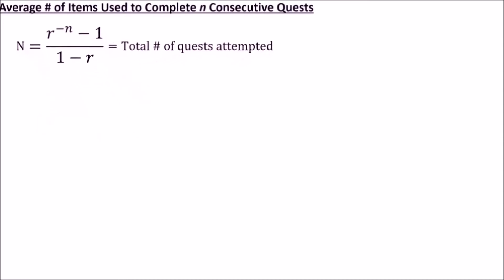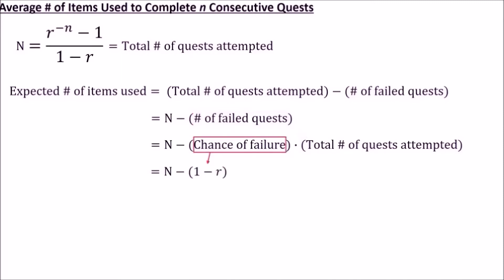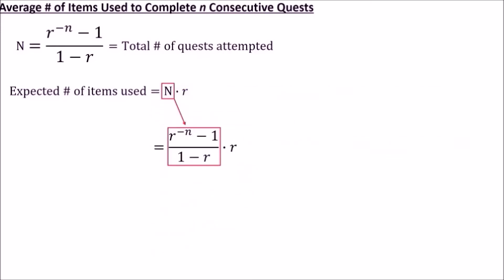Next, we'll use this to figure out the actual number of items used during all those quest attempts. Since we don't use up any items when we fail a quest, we need to subtract off the number of failed quests from the total number of attempts to get the actual number of items used. We just figured out the total number of attempts so we can replace that with capital N, and the expected number of failed quests would be the chance of failing a single quest times the total number of quests attempted. Since there are only two outcomes for each quest, the chance of failing is just one minus the chance of success, and we already know how many attempts it'll take so there's another capital N. Now that we've got everything in terms of variables, we can do a bit of algebra to simplify the expression. Finally, we'll write out capital N in terms of r and little n, which gives us the formula for the average number of items used to get a level 50 prize. We'll use capital E to represent this number.